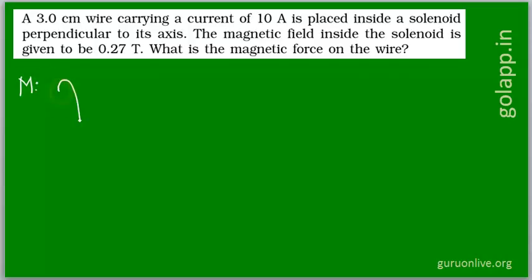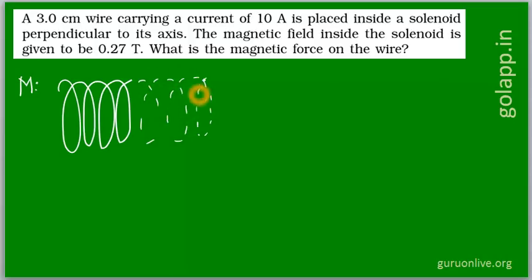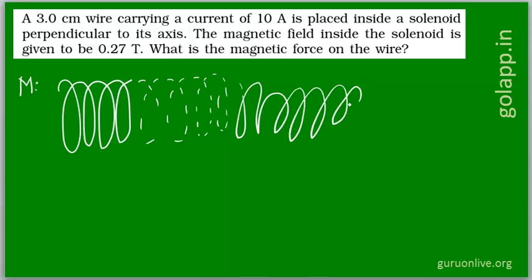There is a solenoid. I am not drawing the middle portion to figure out what is happening inside. So assume that this is a solenoid. In a solenoid, the field will be parallel, like everywhere it is parallel, so it is a uniform field inside the solenoid.